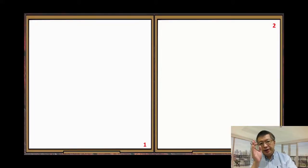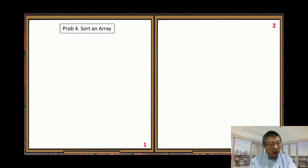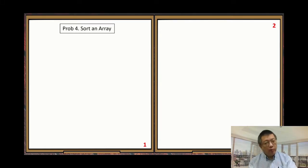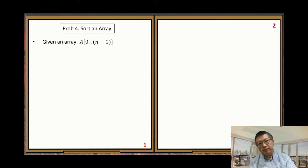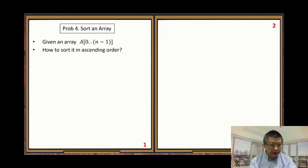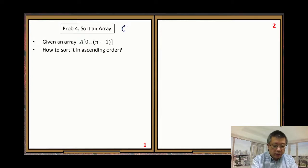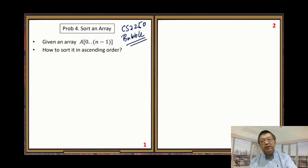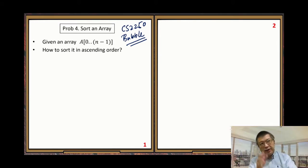First, we study a simple problem — Problem 4: Sort an Array. We know the sort problem. Given an array A with N elements, how do we sort it in ascending order? In CS2250 you learned bubble sort. Later in this class we will talk about bubble sort again. So that means you have some experience with sorting.